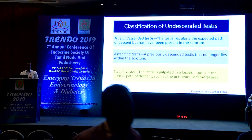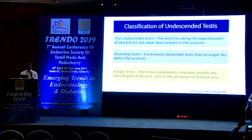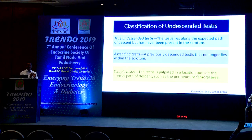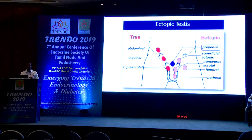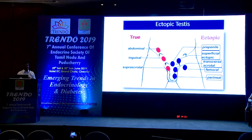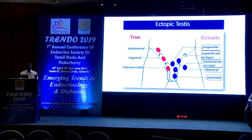Another condition is ectopic testis, where the testis is neither in the base of the scrotum nor along the normal path of descent, but has gone to a location outside the normal descent path. Common positions of ectopic testis include pre-penile, superficial ectopic, transverse scrotal, femoral, or perineal. It is very important to know these ectopic locations, so when we don't palpate a testis along the normal path, we also palpate these ectopic sites.